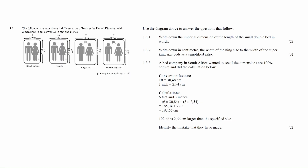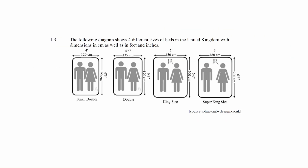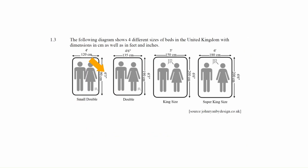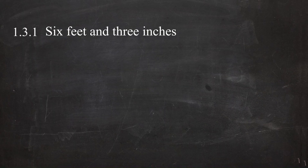Question 1.3 consists of three measurement questions designed to assist your understanding of both the metric and imperial measurement systems. You are given a diagram showing four different bed sizes in the United Kingdom with dimensions expressed in centimeters as well as in feet and inches. For example, the king size bed has a width of 150 centimeters or 5 feet 0 inches, and a length of 200 centimeters or 6 feet 6 inches. In question 1.3.1 you have to write down the imperial dimension of the length of the small double bed in words, which is six feet and three inches.